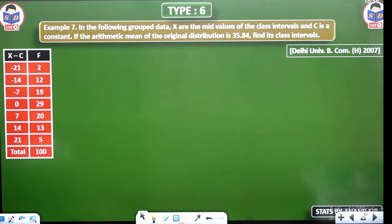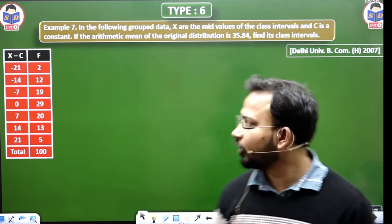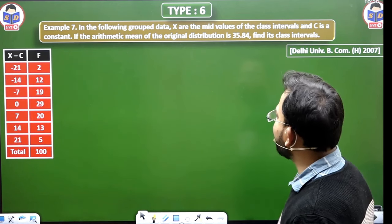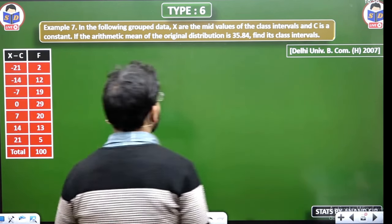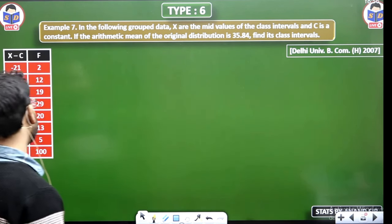Here, you have x minus c. Basically, what happens? D-dice, let's understand this. The question is, in the following grouped data, x are the mid-value of the class intervals. Okay, x already has a mid-value, we have already come to it.